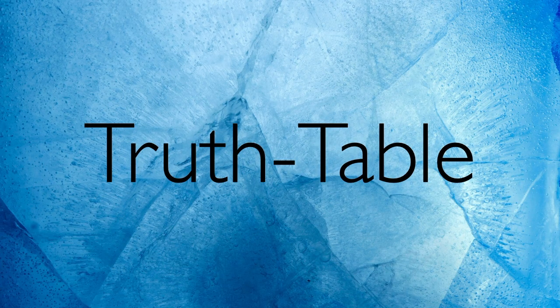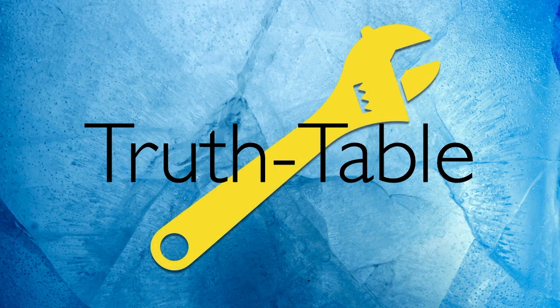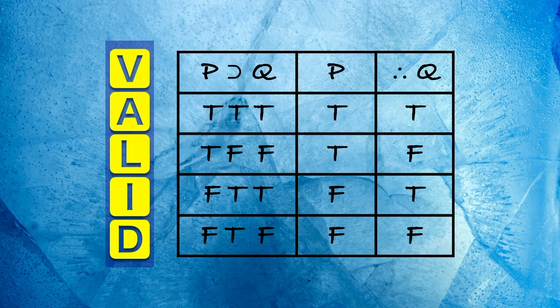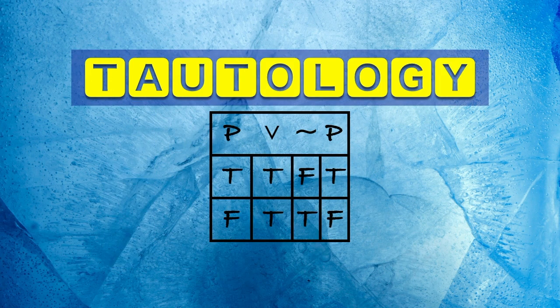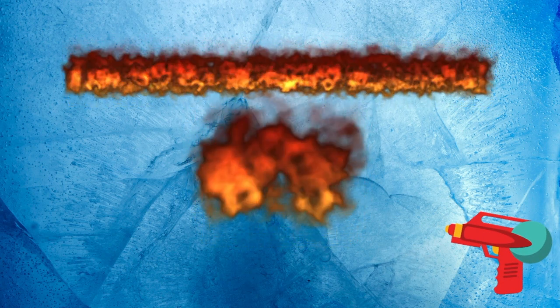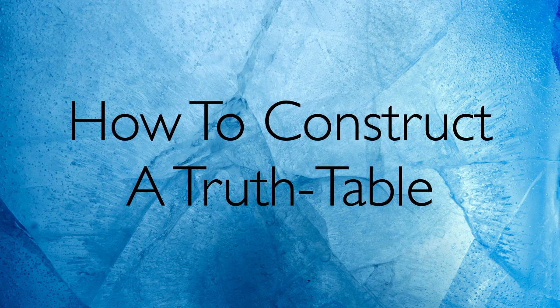A truth table is a tool. You can do lots of logical work with it. For instance, you can plug in an argument and test whether it's valid, or you can write in a single sentence and see whether it's a contradiction or a tautology. But we won't do any of that in this video. We'll focus like a laser beam on just one task: how to construct a truth table.